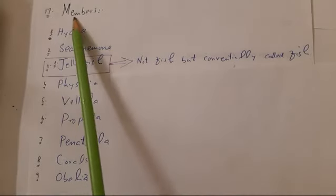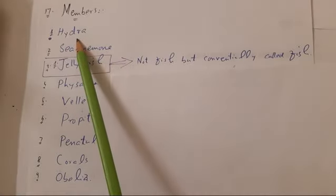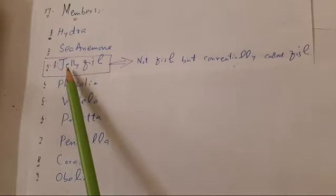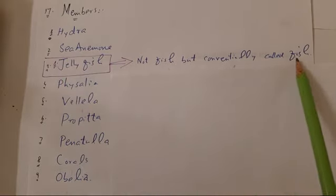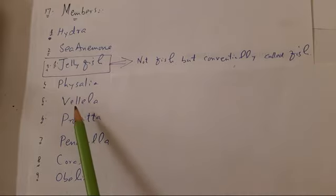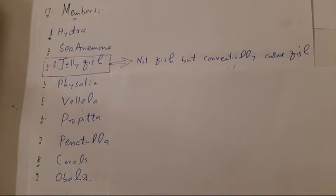The members of Phylum Coelentrata or Cnidaria include: Hydra, sea anemone, jellyfish (not a true fish but conventionally called so), Physalia, Velella, Gorgonia, Pennatula, corals, and Obelia. This is all about Phylum Coelentrata or Phylum Cnidaria. In the next lectures we will study about some members of the phylum. Thank you.